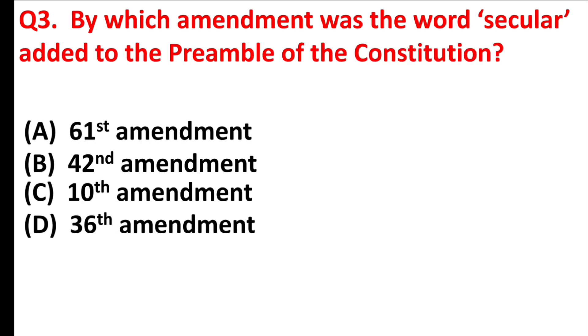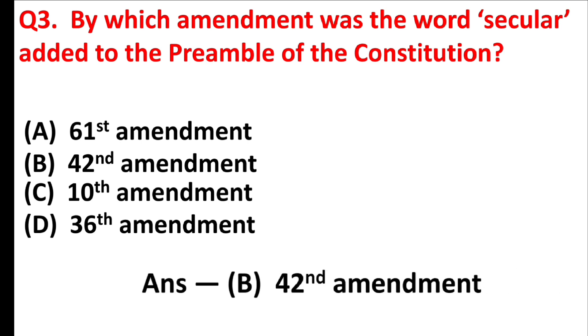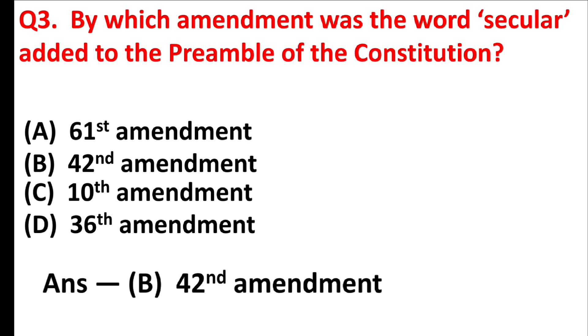By which amendment was the word 'secular' added to the preamble of the constitution? Answer is Option B: Forty Second Amendment.